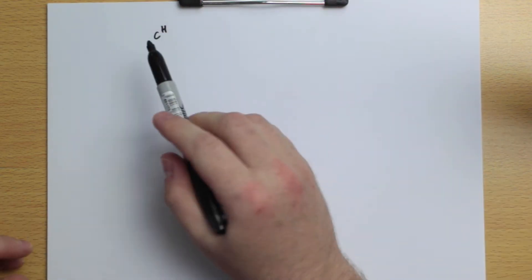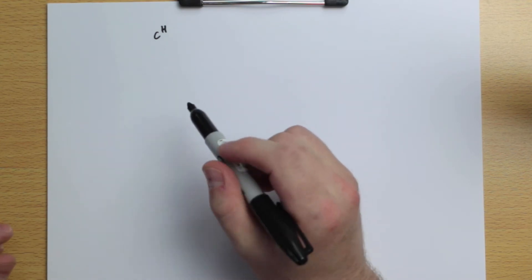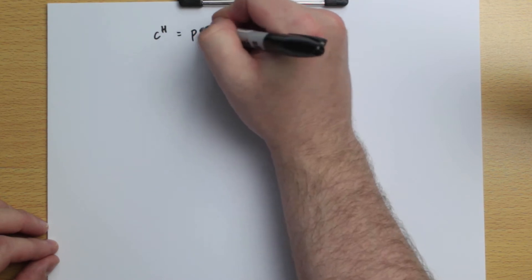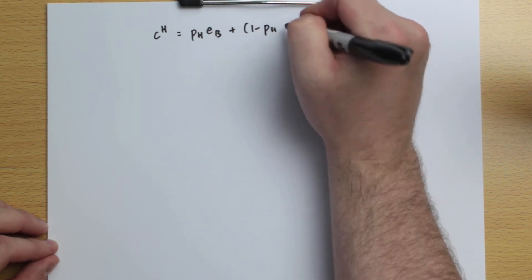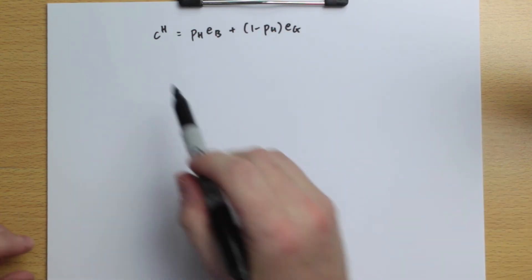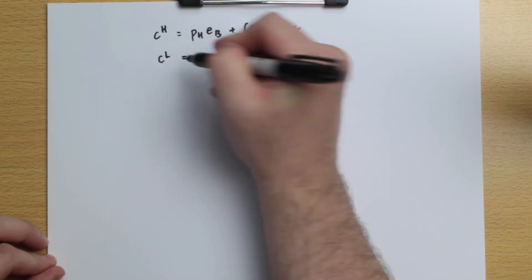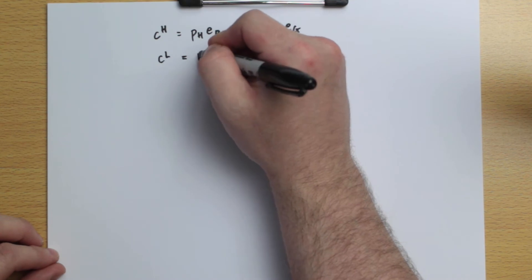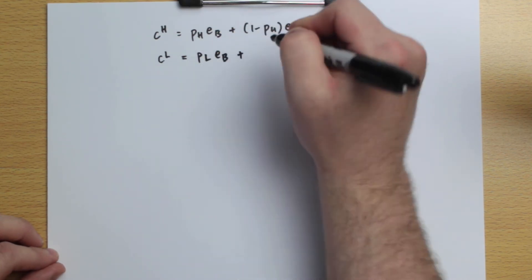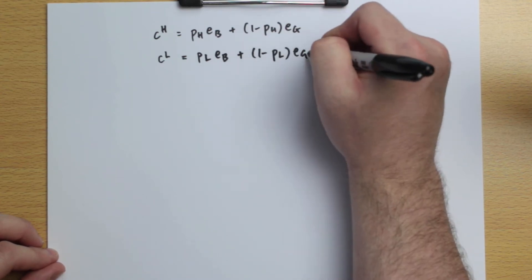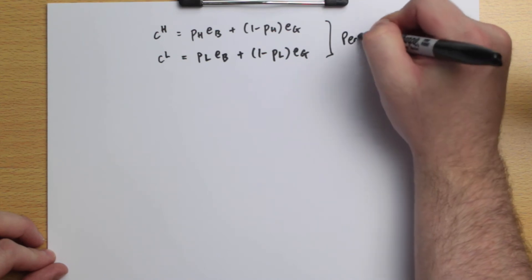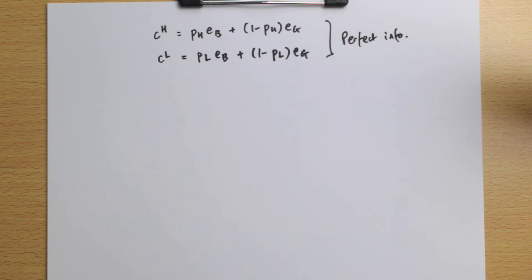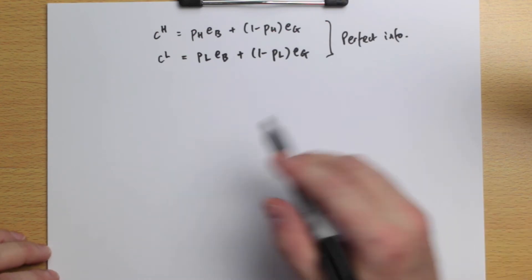These contracts are two-dimensional but because they're risk-free in equilibrium I'll write them as one number. The value of CH equals the expected value of the high-risk type's endowment: pH times EB plus 1-minus-pH times EG. The low-risk types are offered a zero-profit risk-free contract CL equal to pL times EB plus 1-minus-pL times EG. This is perfect information, where all types are identifiable and each consumer knows their own type.